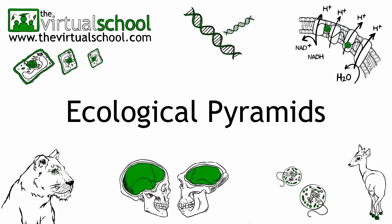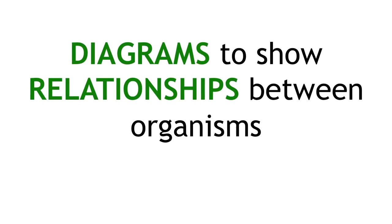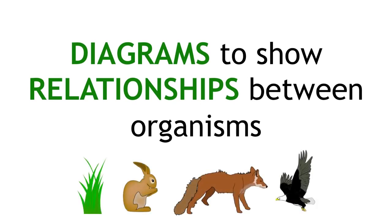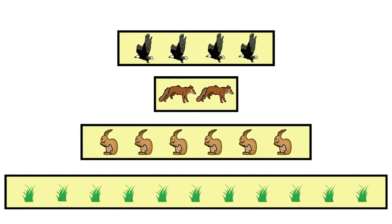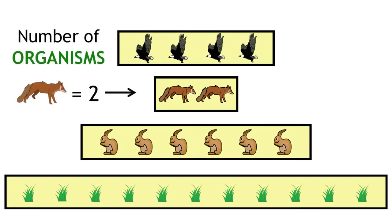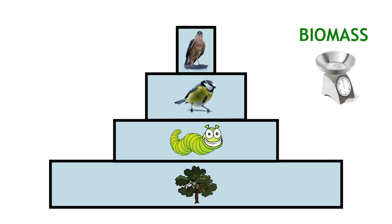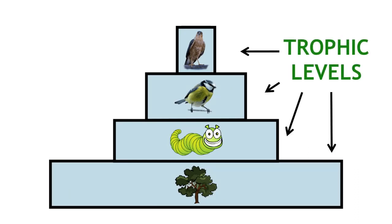Ecological pyramids are diagrams used to display quantitative data and show the relationship between organisms in an ecosystem. They are made up of bars stacked on top of one another. They can be used to show number of organisms or biomass of each trophic level in the ecosystem. They visually describe the quantities that we see in food chains and food webs.